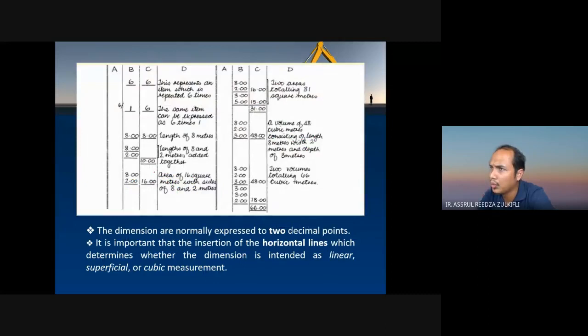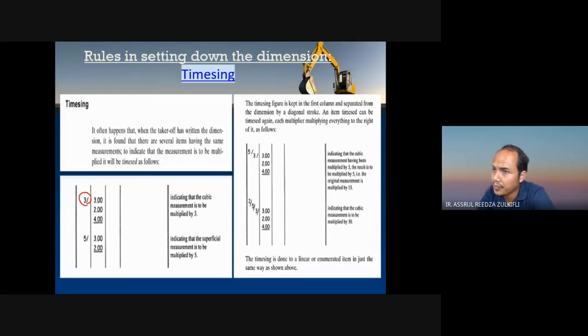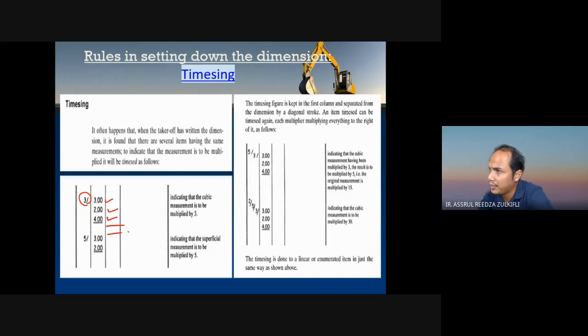This is the example of how you use the taking off sheet. It's called a taking off sheet. Usually it has two columns — the first taking off sheet and another taking off sheet side by side. You can use it until you finish one side, and then use the other side. This is the timesing column: 3 multiplied by 2, multiplied by 3, multiplied by 2, multiplied by 4 — so you get the answer. You can also do 5 multiplied by 3, multiplied by 3, multiplied by 2, multiplied by 4, depending on the item you are calculating.